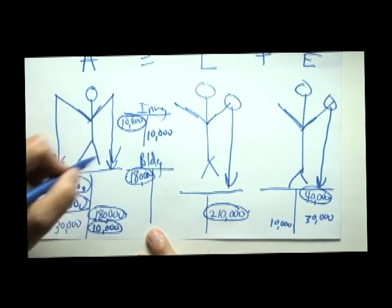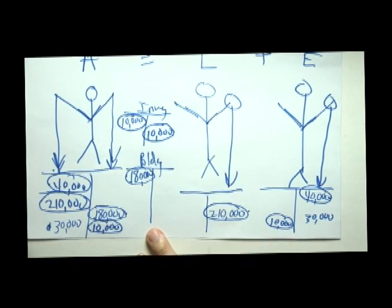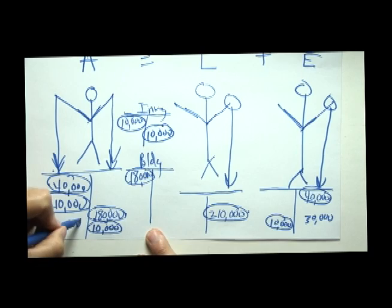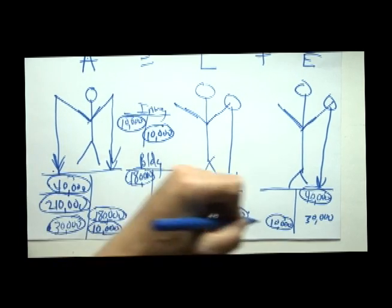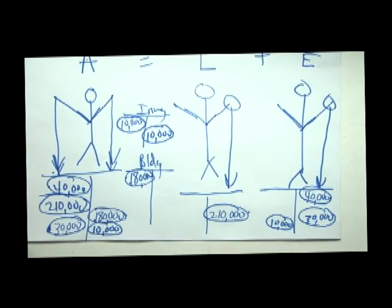When we sell inventory, inventory goes down, equity goes down. And when we get the cash for the sale, cash goes up and equity goes up.